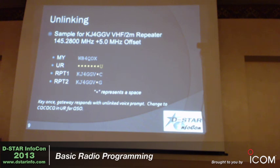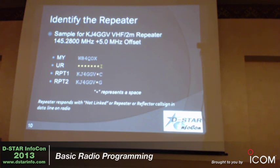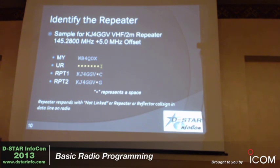How do you know whether it's linked or not? You can ask the repeater. If you put an I in the eighth position of the UR field, it's going to say either 'remote system linked' meaning it's linked somewhere, or 'not currently linked.' If it says remote system linked, that will scroll across the bottom line of your display — for example, 'linked to REF020 alpha.' If it says not linked, then it isn't linked and you can go ahead and issue a link command.